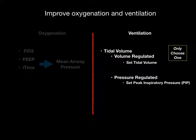If you set the tidal volume to 300 milliliters, based on the compliance of the lungs, the PIP will vary — the machine delivers 300 milliliters no matter what, and the PIP varies based on lung compliance. If you or I were mechanically ventilated, our PIPs would be maybe 10 to 15 centimeters of water pressure. But if you have a really sick patient, it may take 30 centimeters of water to deliver the exact same tidal volume.